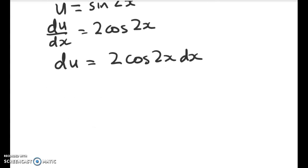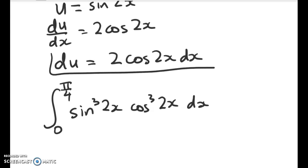So we can rewrite du as 2 cos 2x dx. We're going to use that to evaluate this. So we've got the integral of sine cubed 2x cos cubed 2x dx. OK, so we're not quite there yet. We've got du is equal to 2 cos 2x dx.